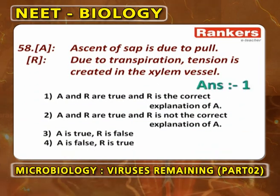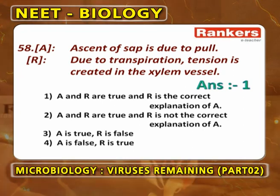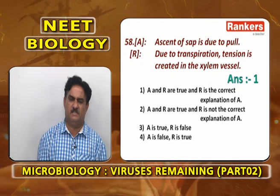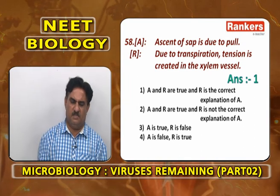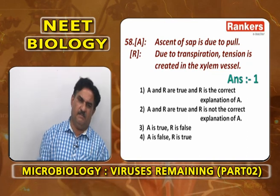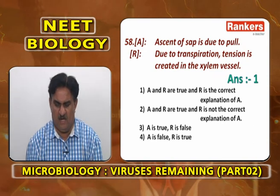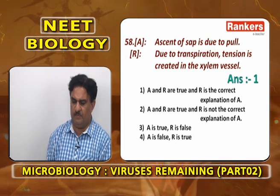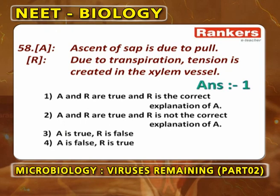Assertion-reasoning: Ascent of sap is due to pull — that pull is called transpiration pull. Due to transpiration, tension is created in xylem vessels. Transpiration makes tension in mesophyll cells, then to xylem, then to root, and the plant starts absorbing water. A and R are correct; R is the correct explanation of A. First option.